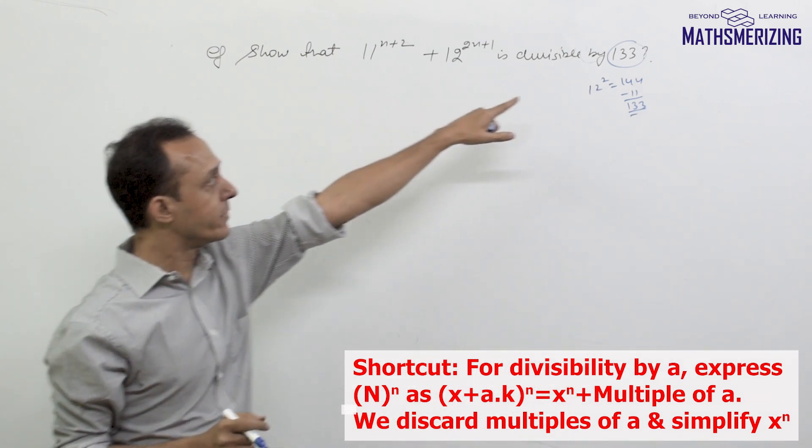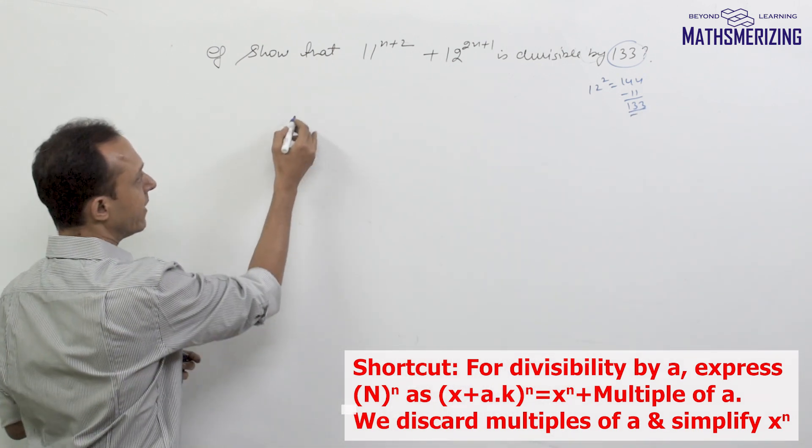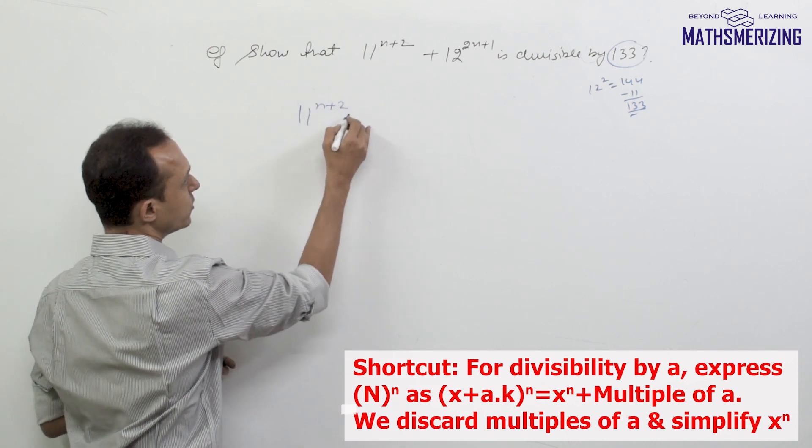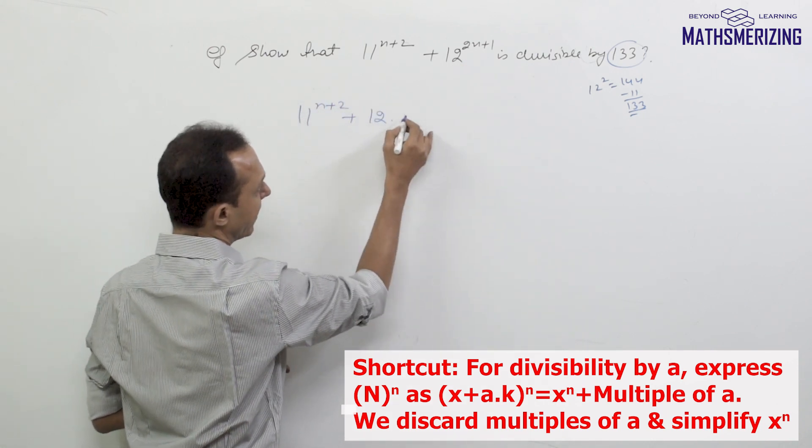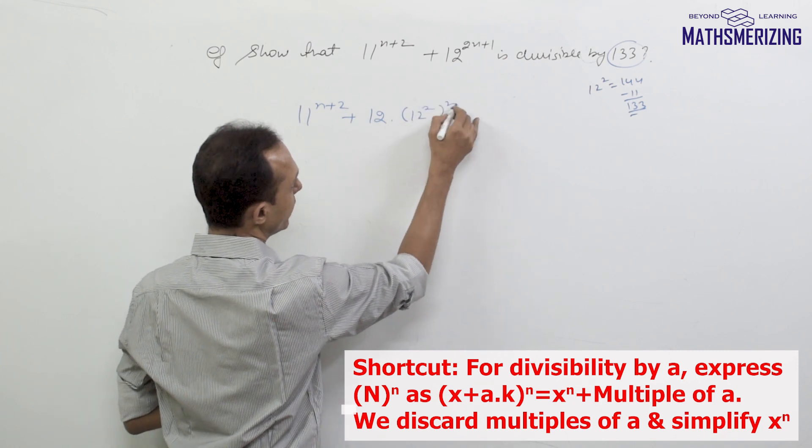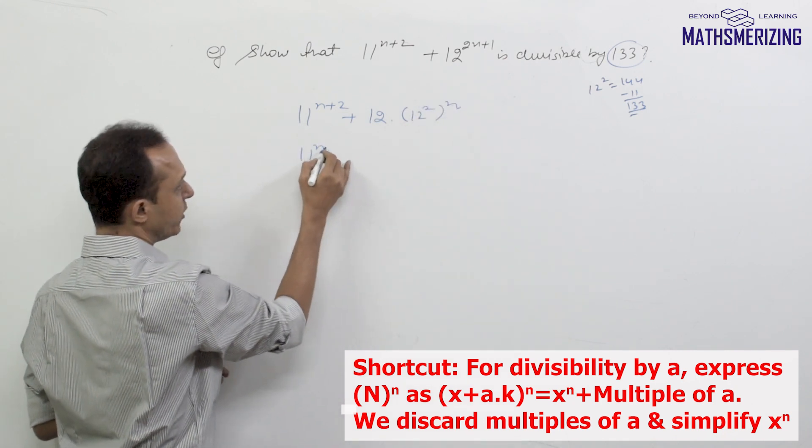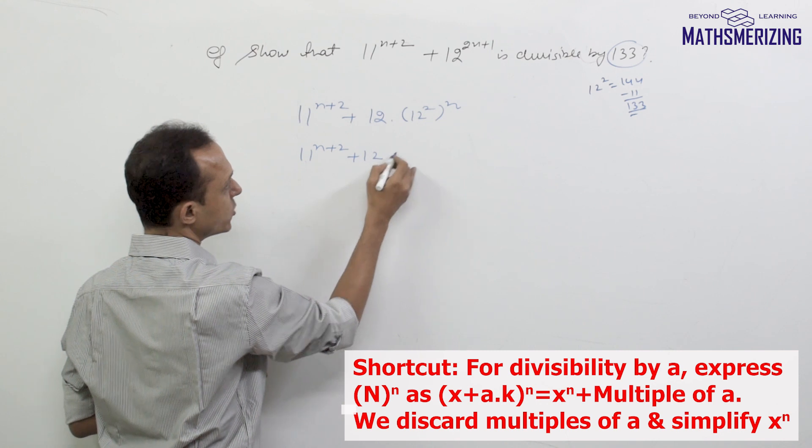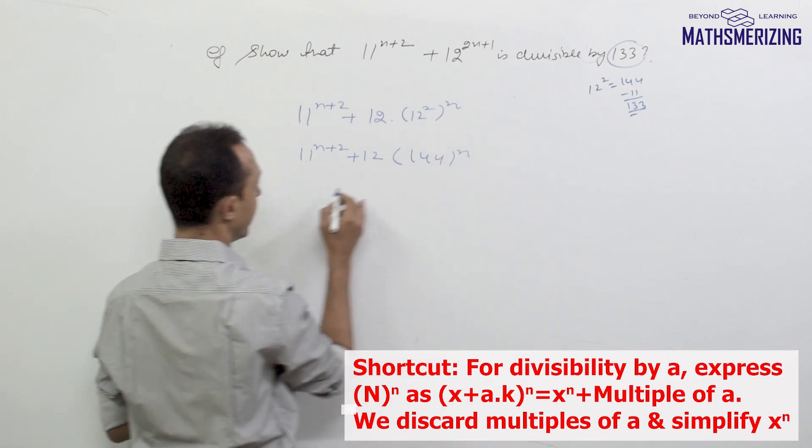This is how I can relate 133 with the given expression. I can write 11^(n+2) and then I'll separate the 12, writing 12 times (12²)^n. So it's 11^(n+2) + 12 × 144^n.